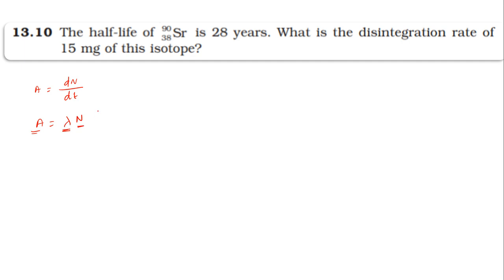Lambda is in the form of 0.693 divided by the half-life period. The half-life of Sr-90 is 28 years, and the mass given is 15 milligrams of the isotope.